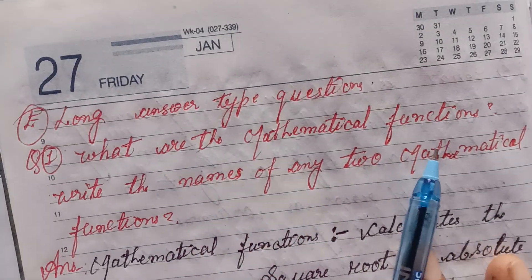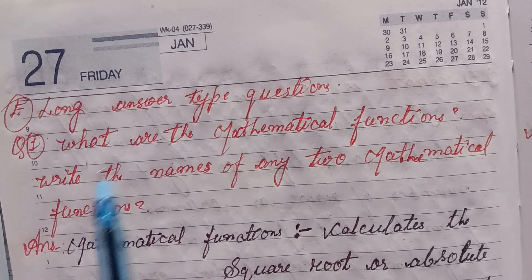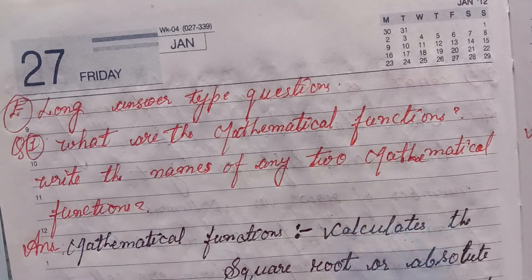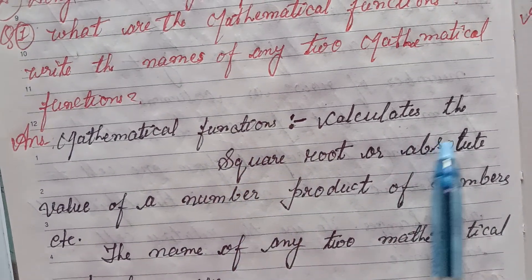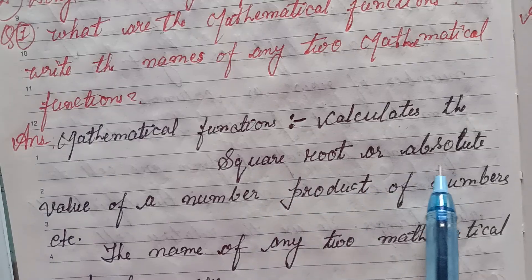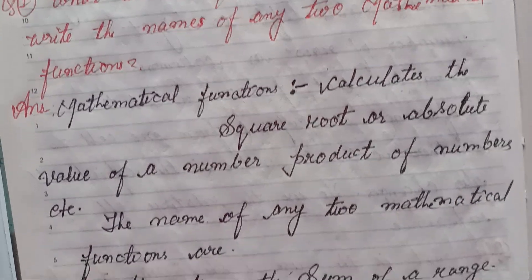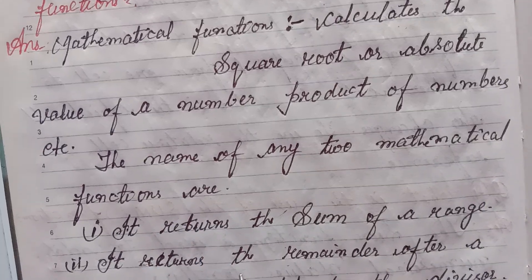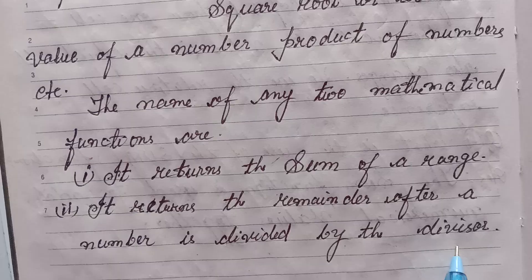Long answer type questions. First, what are the mathematical functions? Write the names of any two mathematical functions. Answer: Mathematical functions calculate the square root or absolute value of numbers, product of numbers, etc. The names of any two mathematical functions are: first, SUM, which returns the sum of a range; second, MOD, which returns the remainder after a number is divided by the divisor.